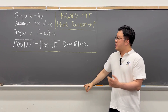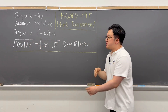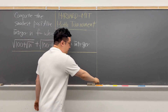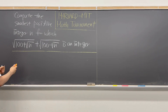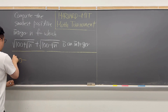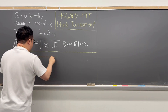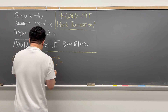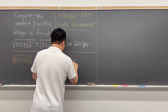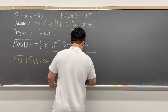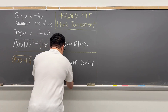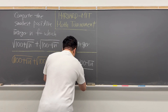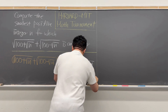To make it a little easier to work with, since the question already says this whole expression is an integer, if you square that, it has to be an integer too. So I'm going to square this expression first. If you square (√(100+√n) + √(100−√n)), you get 100 plus √n, plus 100 minus √n, plus 2 times the square root of (100+√n)(100−√n).